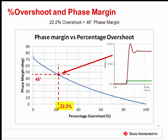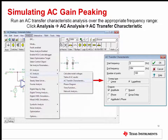Find the x-axis coordinate for the 22% overshoot measurement, and then draw a straight line up until it intersects the phase margin versus percent overshoot curve. Then draw a horizontal line at this point to the y-axis to determine the phase margin. 22.2% overshoot correlates to roughly 46 degrees of phase margin, which is barely above the recommended 45 degrees of phase margin.